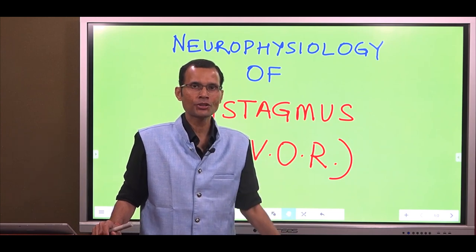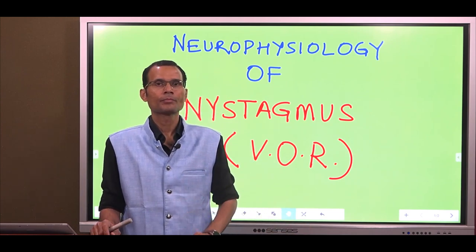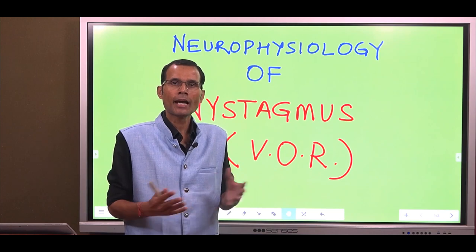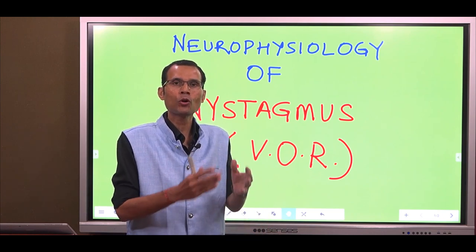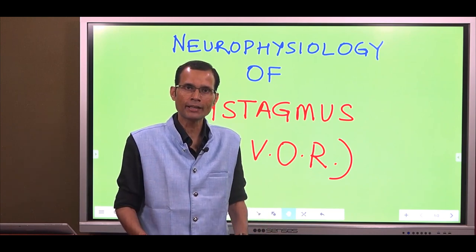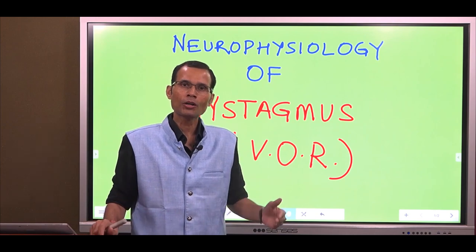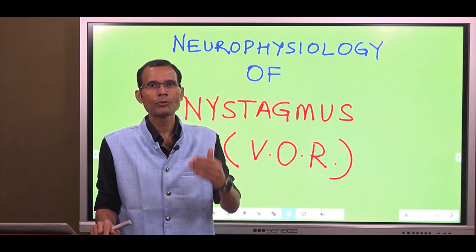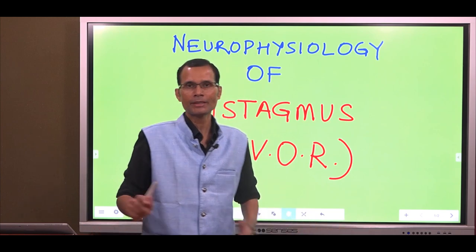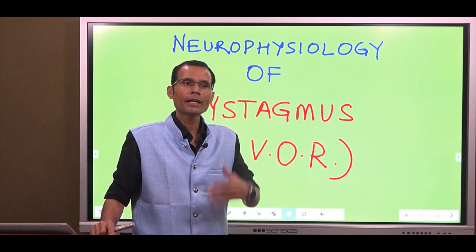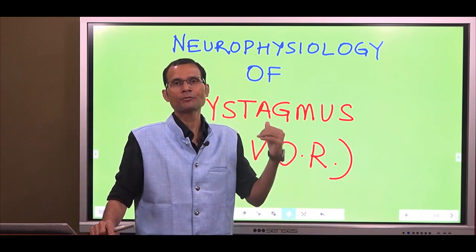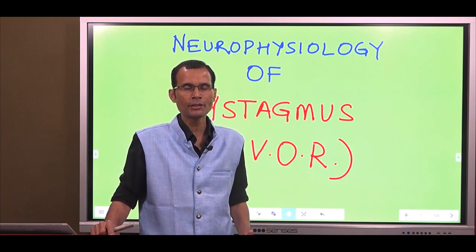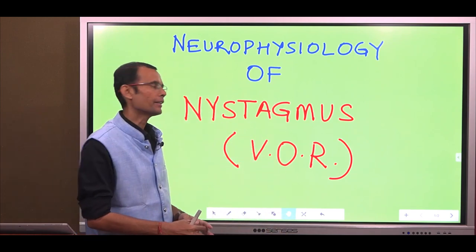Nystagmus could happen physiologically, as we will see — physiologically it happens as the vestibulo-ocular reflex. Or it could happen in certain disease conditions, which we will talk about later. But let's start with the physiological basis and the circuitry behind it.